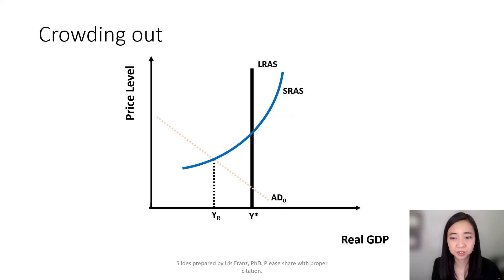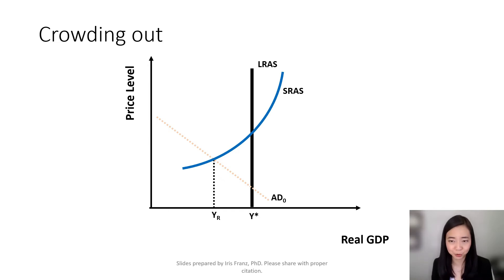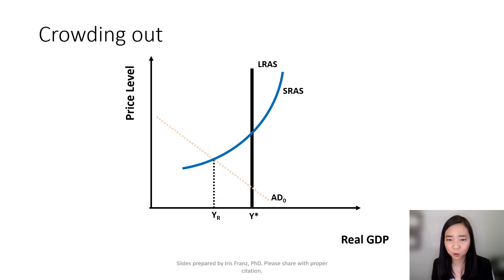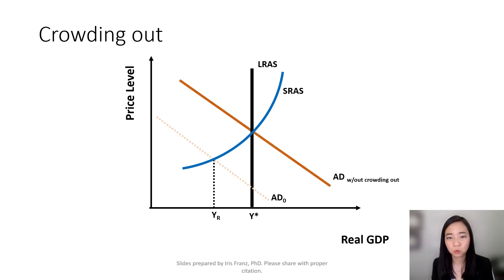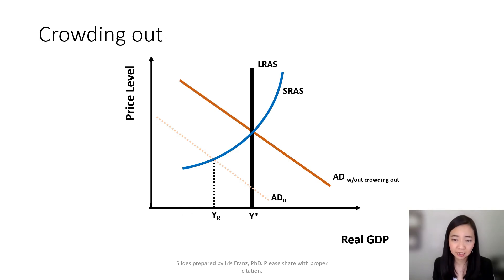Here is an analysis of crowding out. Suppose we are currently in a recession and our aggregate demand curve is at AD0. Suppose the government conducts an expansionary fiscal policy without borrowing any money — that is going to shift our aggregate demand all the way to the right from AD0 to AD without crowding out. But suppose the government doesn't have the money and will have to borrow to conduct an expansionary fiscal policy.